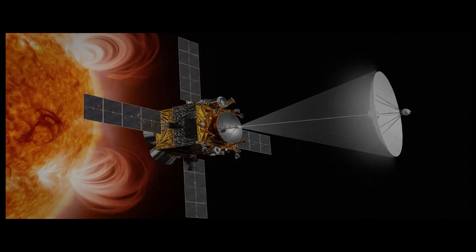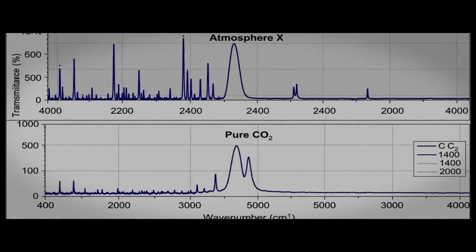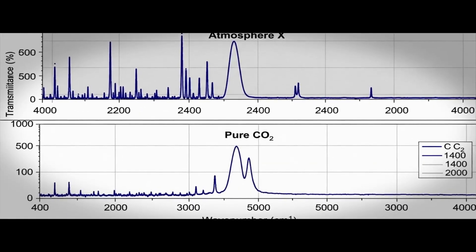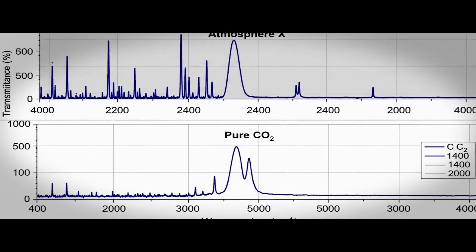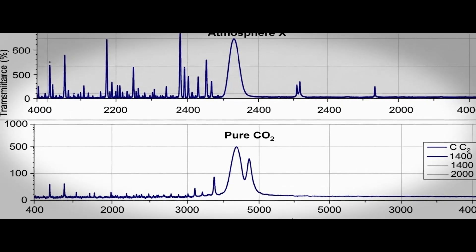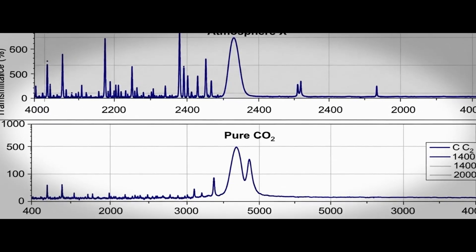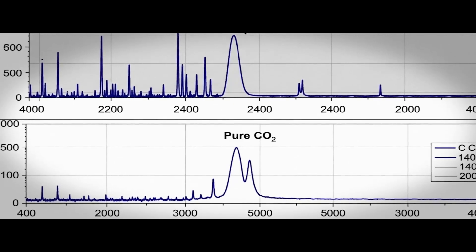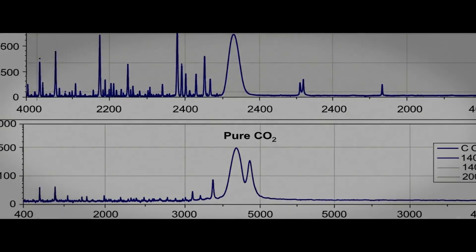The trajectory of 3I atlas has intrigued dynamicists. It does not follow a smooth curve, but a slightly irregular one, as if small additional forces, perhaps interplanetary electromagnetic fields, were interfering with its path. This anomaly is minimal, almost imperceptible, but enough to arouse the interest of those who remember the controversies around Oumuamua.